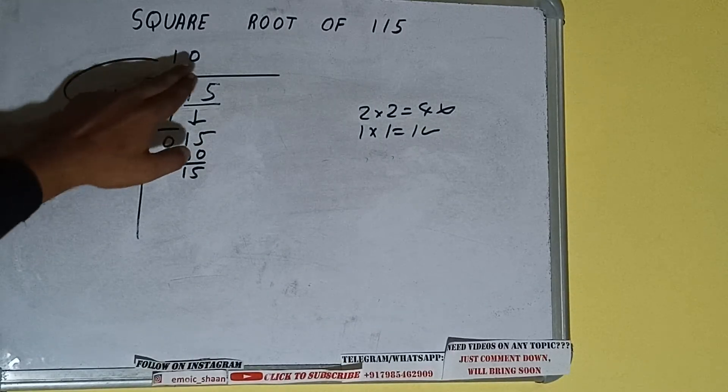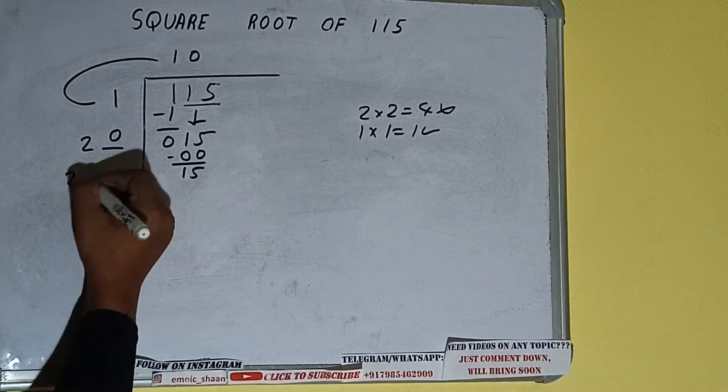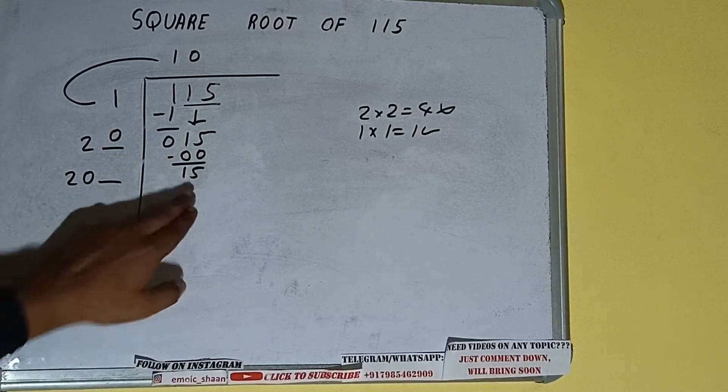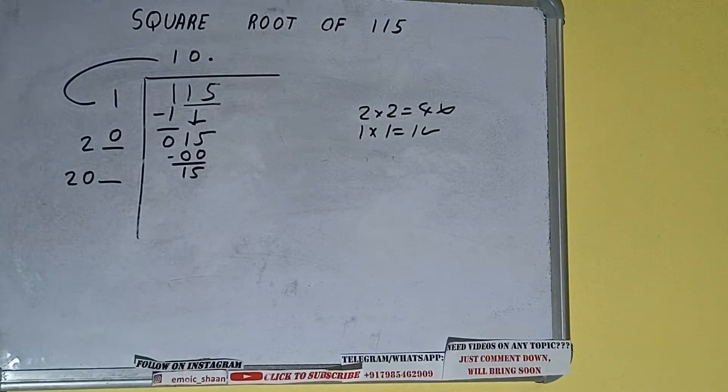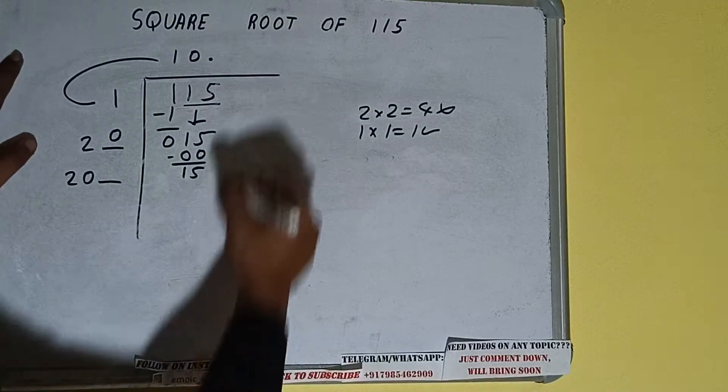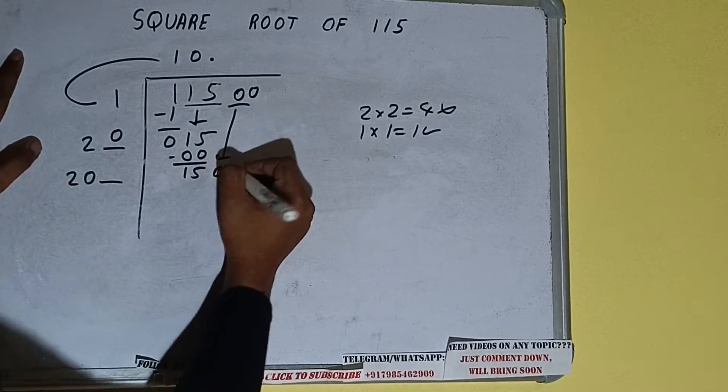Now 20 into 0 we did so add both. So 20 plus 0 will be once again 20 but 1 digit extra. And this number we need to make it big but we don't have more pairs. So we'll put decimal. Once we put decimal we can bring a pair of zeros down and the number will be 1500.